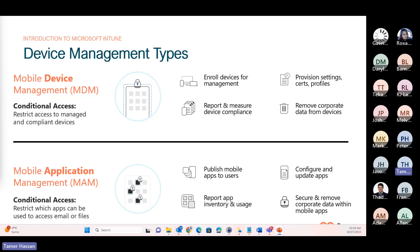When a device is under mobile device management, you control the entire device and can wipe data from it or reset it to factory settings. With MAM, you control your business data on your users' personal devices — such as iPhone, Android, and personal Windows computers. You can use application management policies to prevent users from copying business data from Office apps to their personal apps. You can also remove all data from the Office apps on their personal devices, and publish, push, configure, secure, monitor, and update mobile apps for your users.